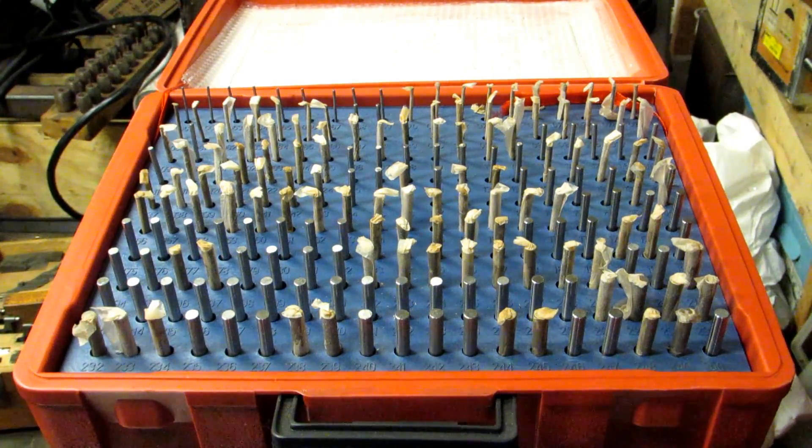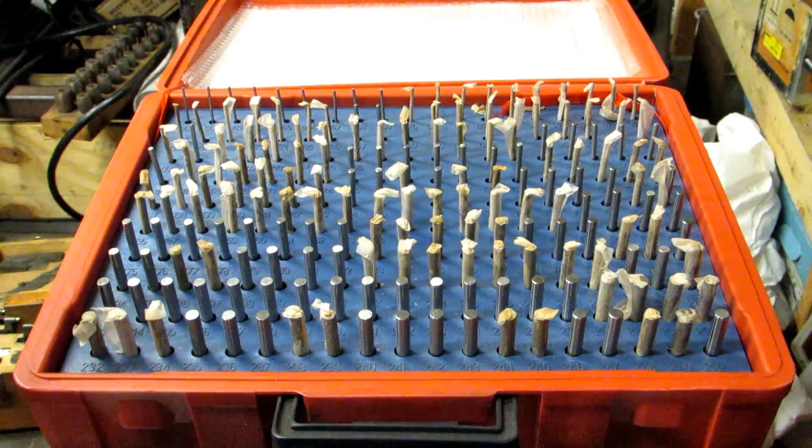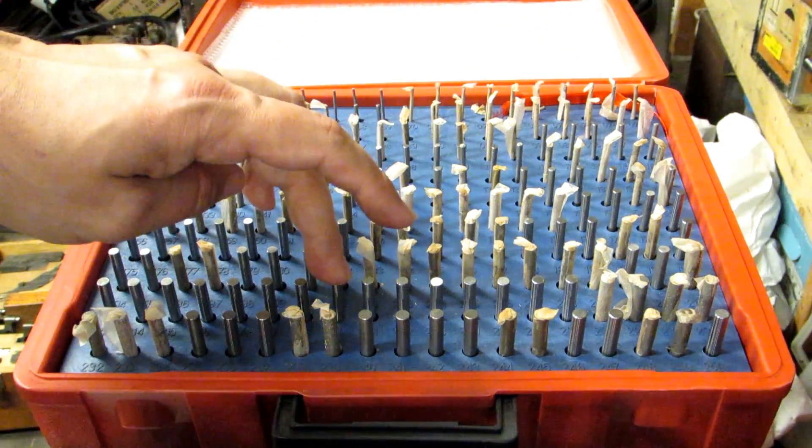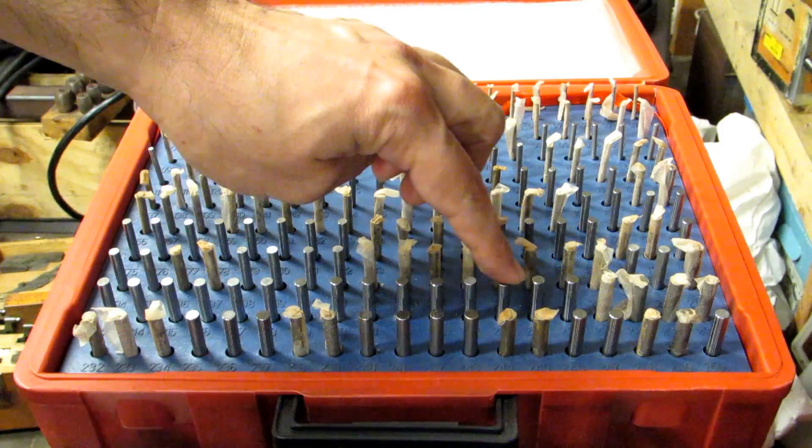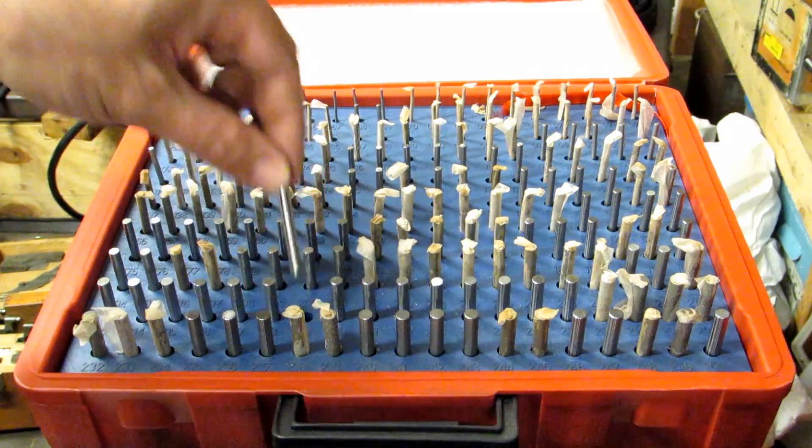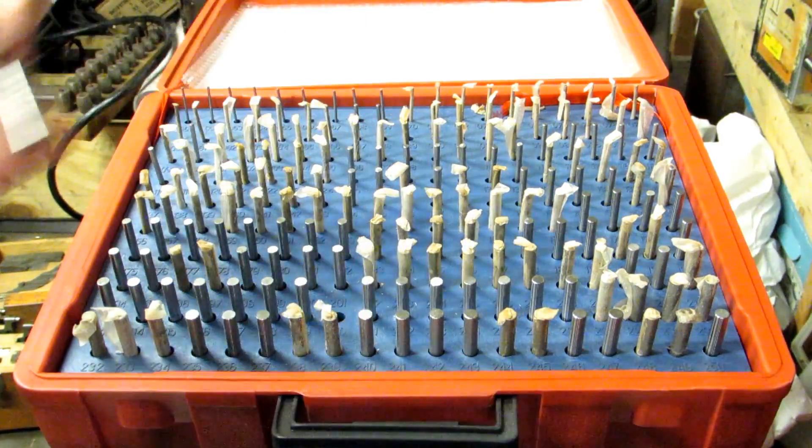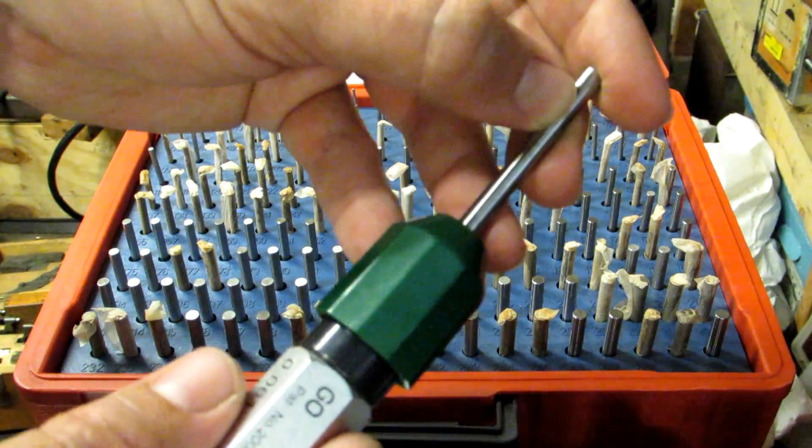In use as go/no-go gauges, let's say your hole tolerance was from 220 thousandths up to 225 thousandths. You can grab your 220 pin and you can put it in the go side.